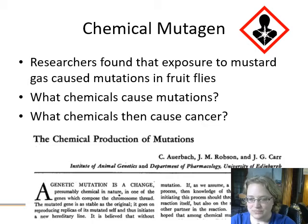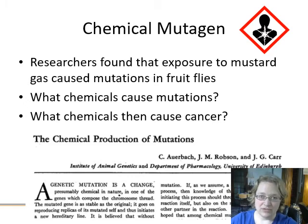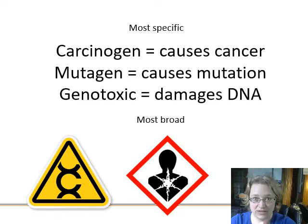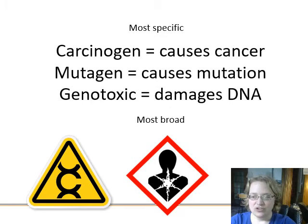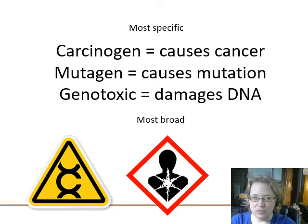Many chemicals cause mutations — tobacco, alcohol, industrial chemicals — and there's a definite link between increased mutation rate and increased cancer rates. Cancer is when a cell basically forgets how to undergo programmed death once mutated. A carcinogen is a substance that causes cancer; a mutagen causes mutations but not all mutagens directly cause cancer. The broadest class is genotoxics — anything that damages DNA — which may cause mutations, which may then cause cancer.